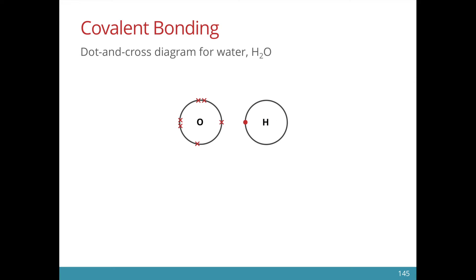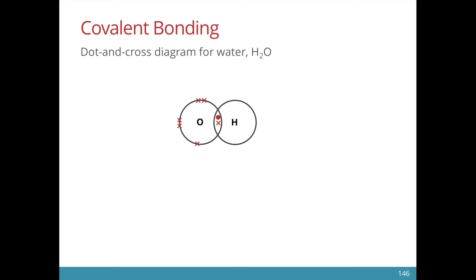When electrons are shared between two different atoms, things get a little bit more complicated. Let's look at the bonding in the water molecule. Oxygen is in group 6, it needs two more electrons. Hydrogen needs one electron to complete the outer shell. When hydrogen bonds to oxygen, you can see that hydrogen satisfies its outermost shell of two electrons.